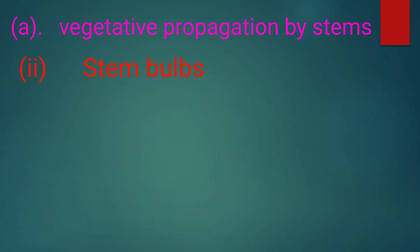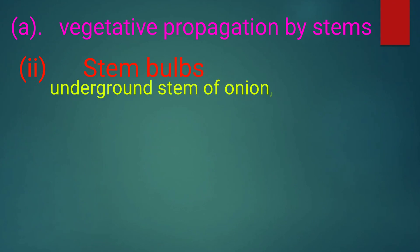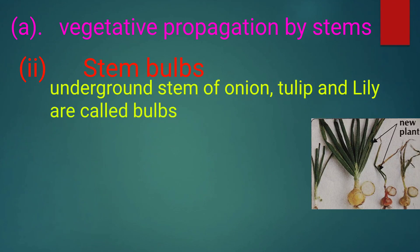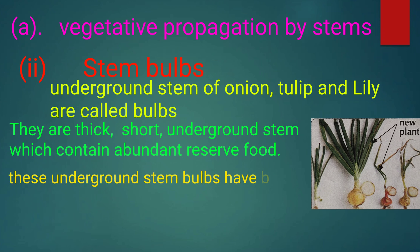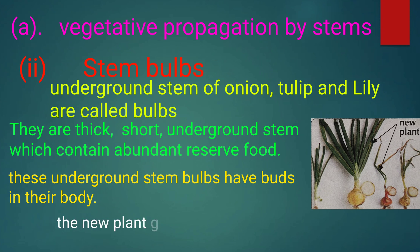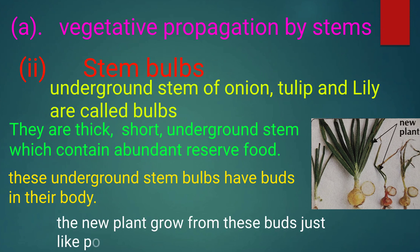Stem bulbs. The underground stems of onion, tulip, and lily are called bulbs. They are thick, short underground stems which contain abundant reserve food. These underground stem bulbs have buds in their body. New plants grow from these buds, just like the potato plant.